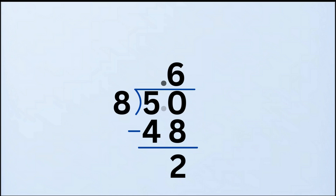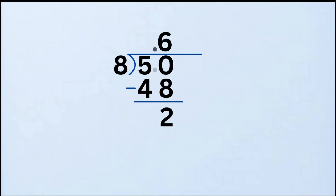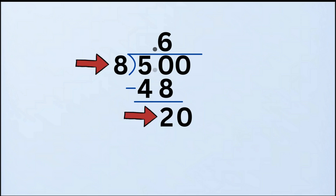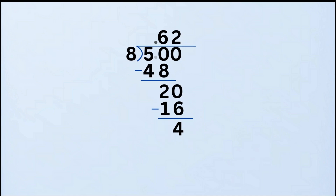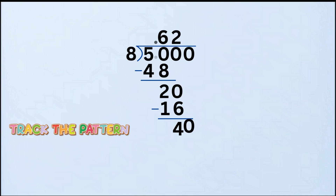Still got a remainder — keep going! Bring down another 0 from the dividend next to the 2, making the new number 20. How many times does 8 go into 20? That's 2 times, because 8 times 2 equals 16. Write 2 in the quotient. Subtract: 20 minus 16 equals 4. Still not done. Bring down the next 0 from the dividend, placing it next to the 4, making 40.